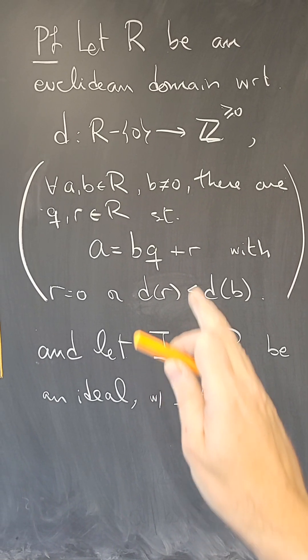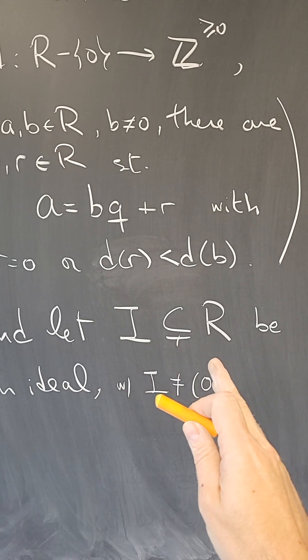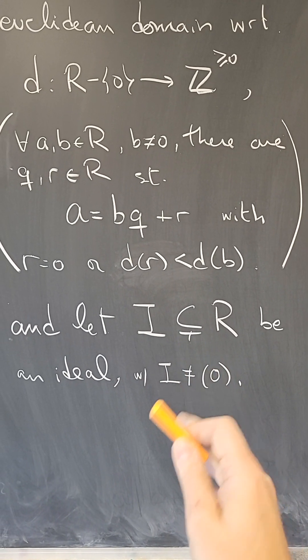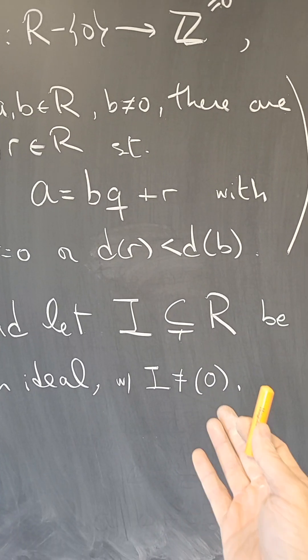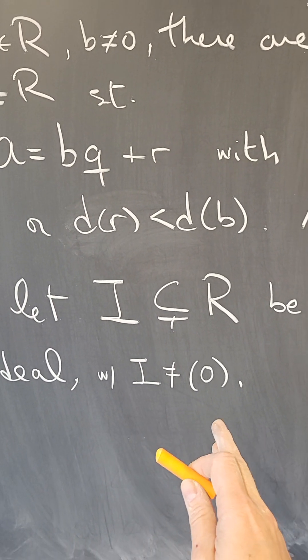So now we want to prove that this is a principal ideal domain. Let I be an ideal of R and let's prove that it is principal. If I is zero, then that's clearly principal. So let's assume that I, the ideal, is non-zero.